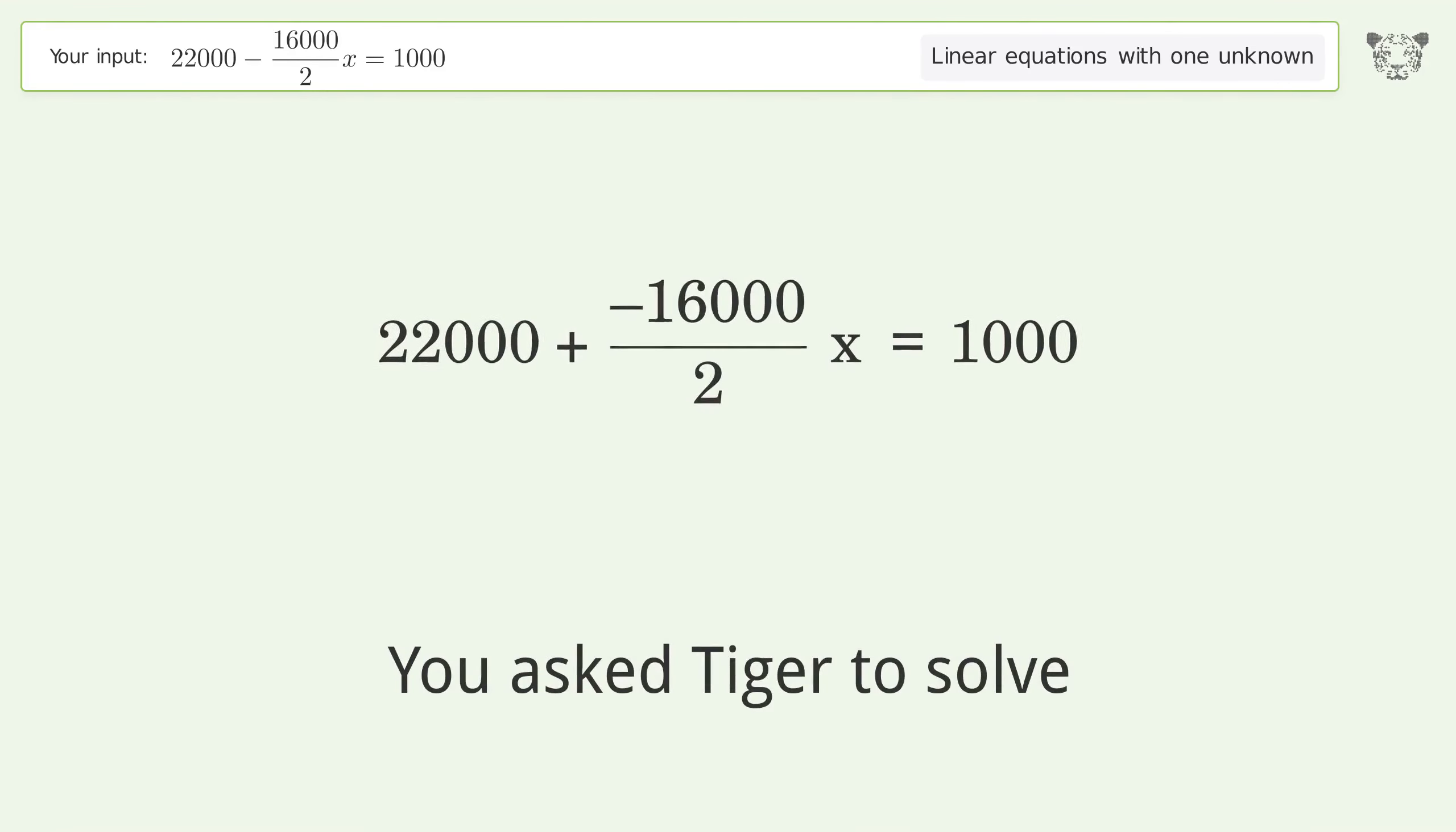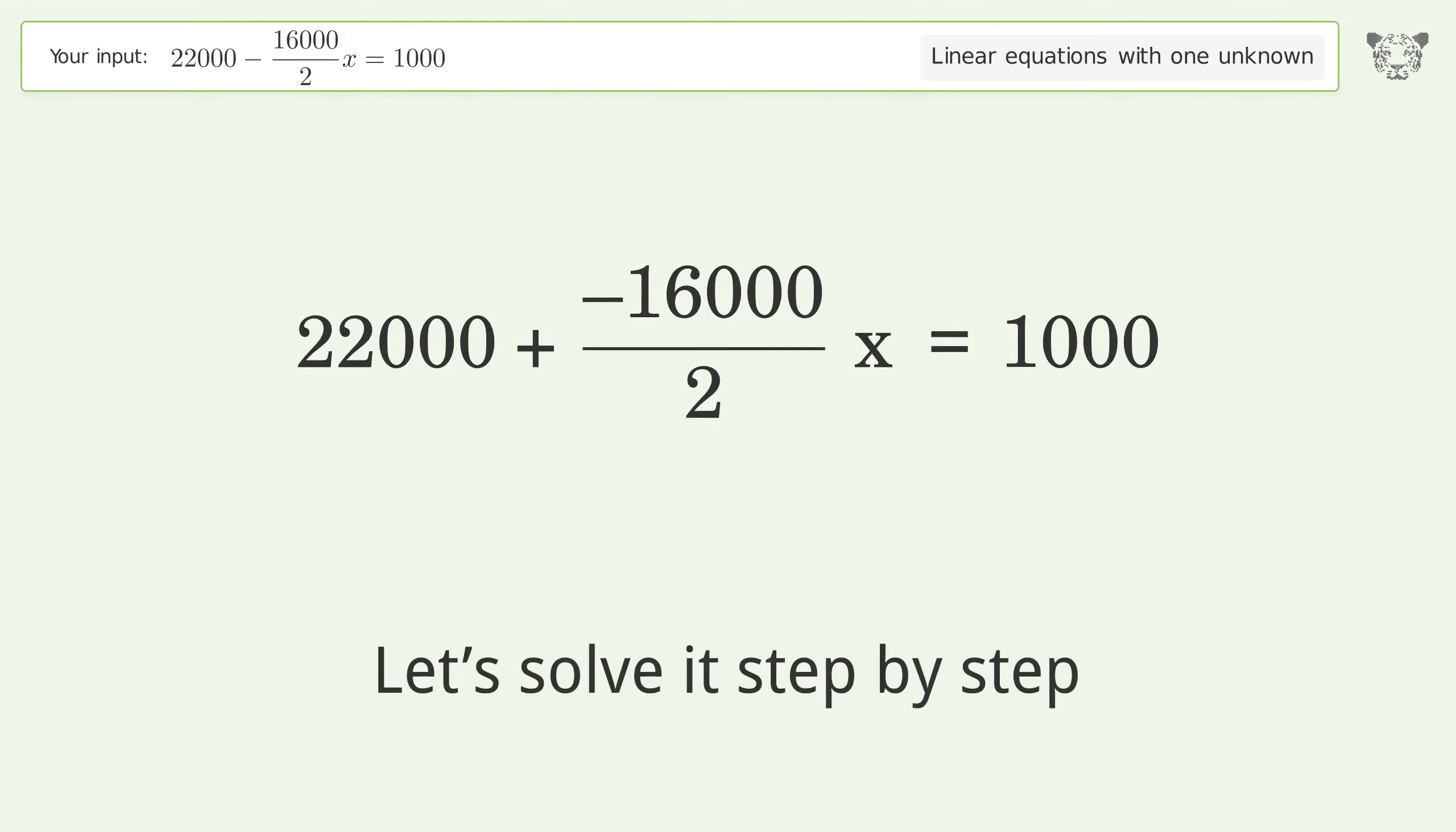You ask Tiger to solve this. It deals with linear equations with one unknown. The final result is x equals 21 over 8. Let's solve it step by step. Simplify the expression, combine like terms.